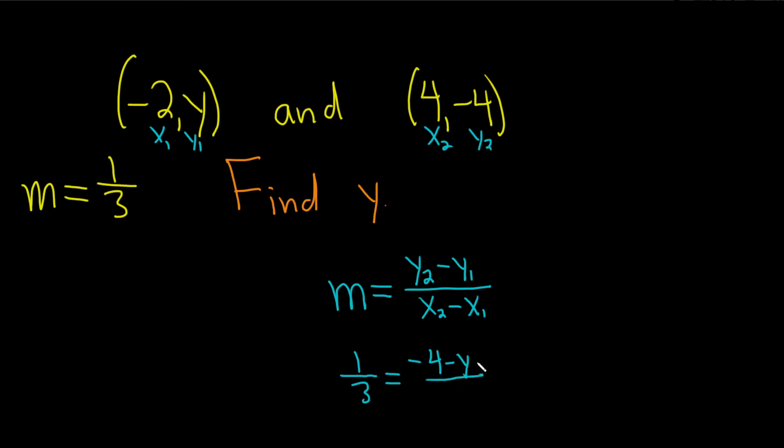In the denominator, it's x2 minus x1, so it's 4 minus negative 2. So 4 minus, and then parentheses, negative 2.